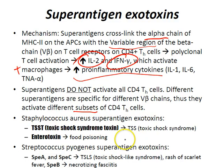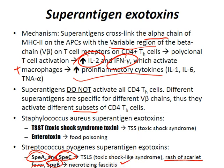Those are the Staphylococcus aureus superantigen exotoxins. With Streptococcus pyogenes superantigen exotoxins, you can have SPEA and SPEC, which leads to toxic shock-like syndrome where you have a rash of scarlet fever. And then you can also have SPEB, which leads to necrotizing fasciitis.